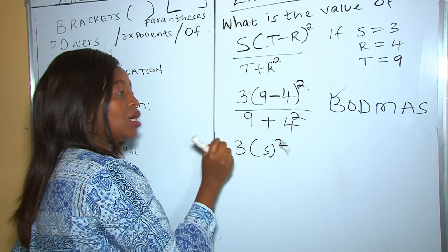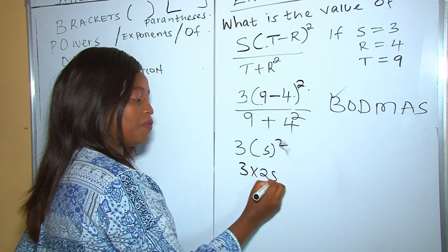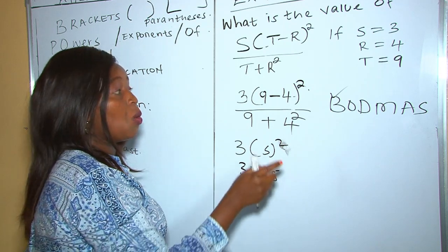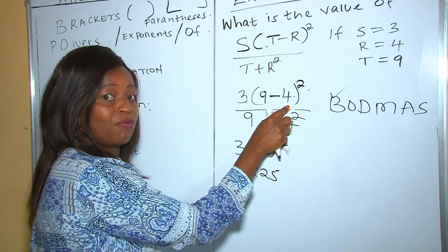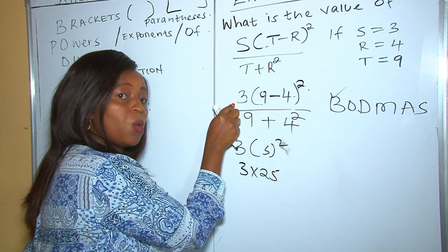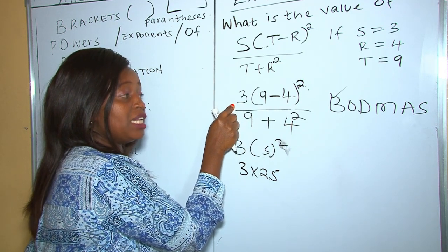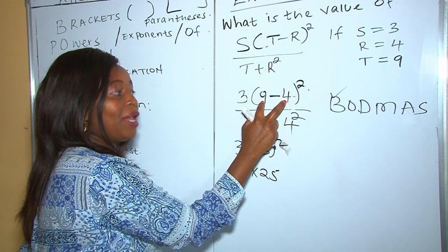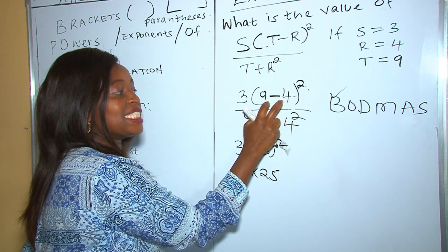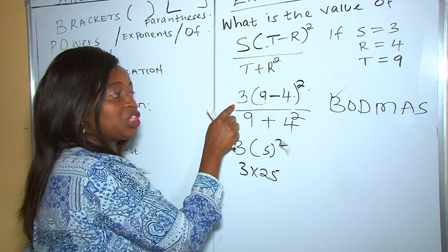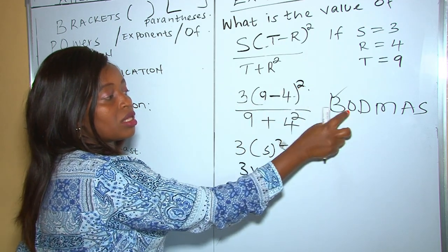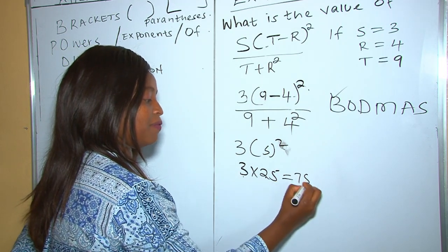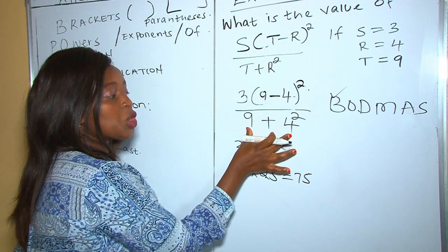Remember the coefficient of the bracket is 3, so it's 3 times 25. Please, my dear students, never make the mistake of saying 9 minus 4 is 5, then multiplying by 3 to get 15, then squaring. That is wrong. The square applies to the numbers inside the brackets before multiplication. So 3 times 25 is 75 — we are done with the numerator.